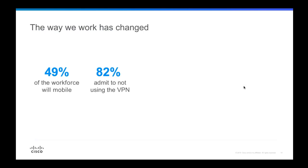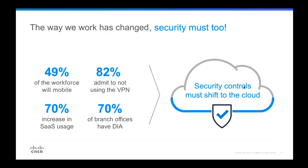The way we work has changed. 49% of the workforce is mobile, and a recent survey found 82% of respondents admitted they're not using VPN at any time. Cloud and SaaS adoption is increasing — expected to reach about 70% of usage. Yet 70% of enterprise branch offices report direct internet access. WannaCry showed this was a major problem — it wasn't centralized sites being affected, but those with direct internet access that were compromised. Security controls need to shift to the cloud.